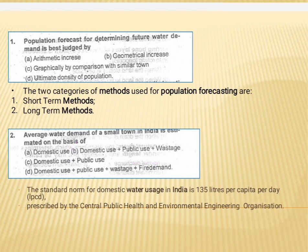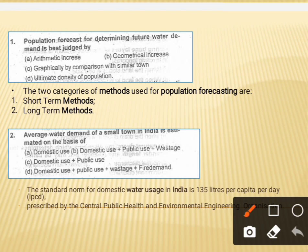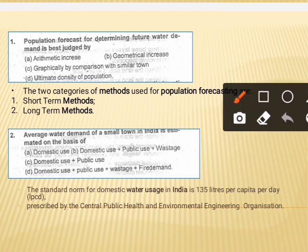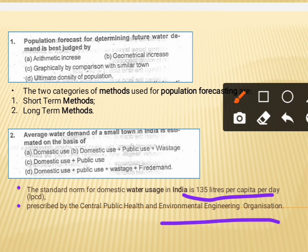The standard norm for domestic water usage in India is 135 litres per capita per day. This standard was prescribed by the CPHEEO — the Central Public Health and Environmental Engineering Organisation.